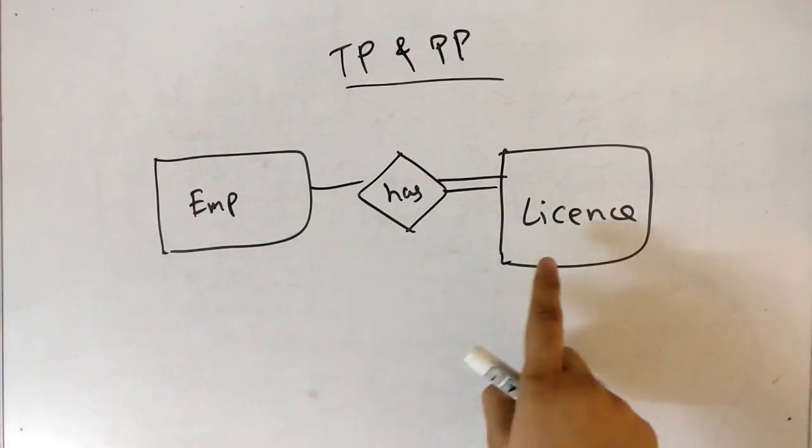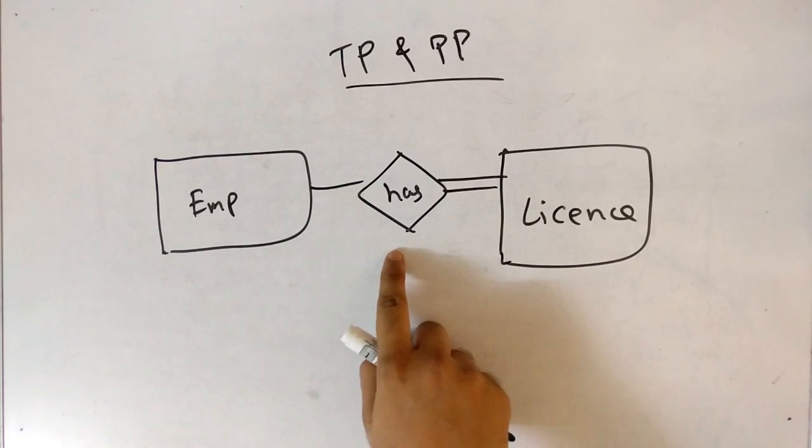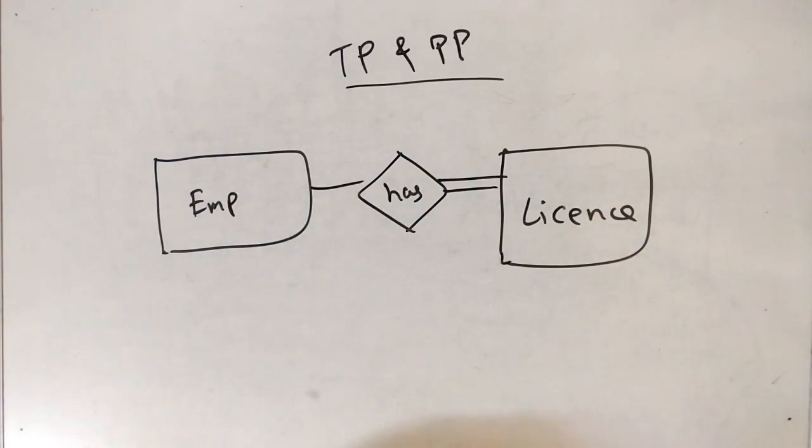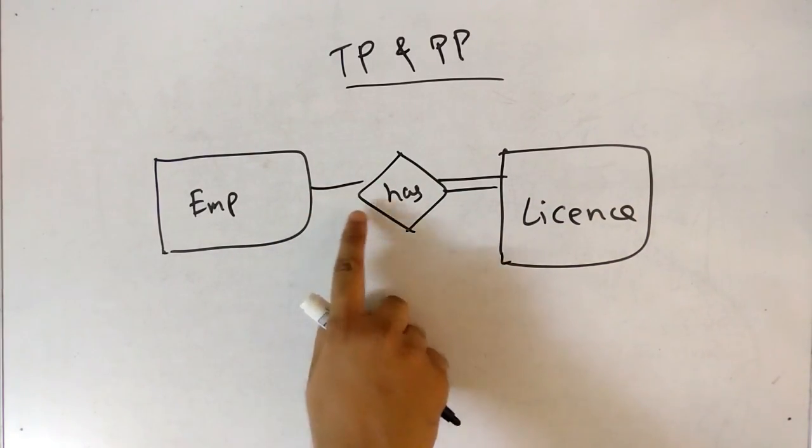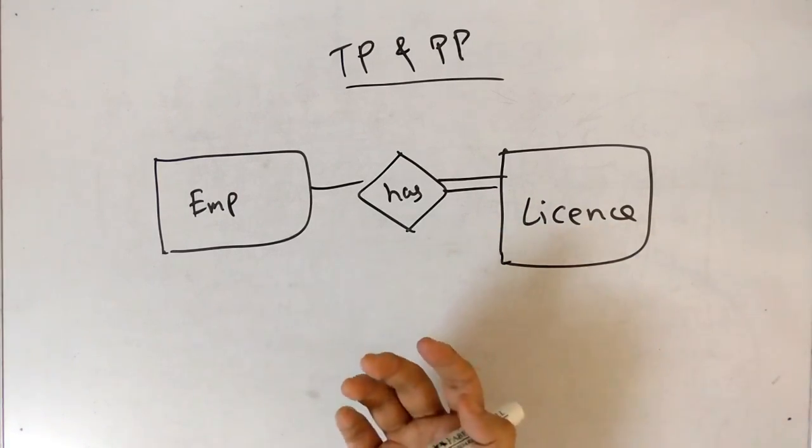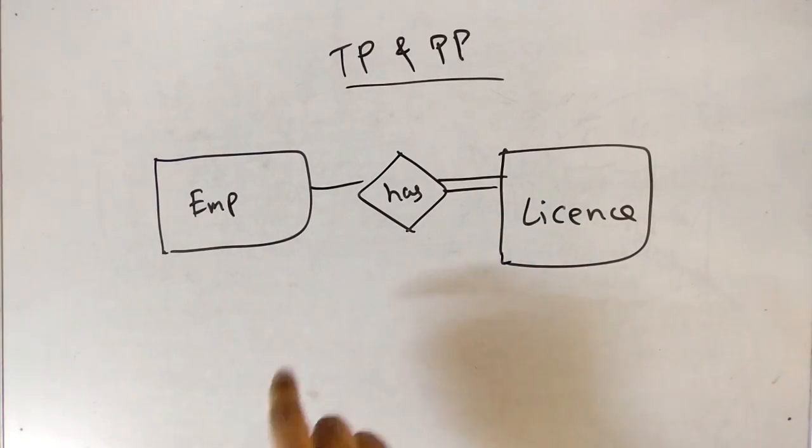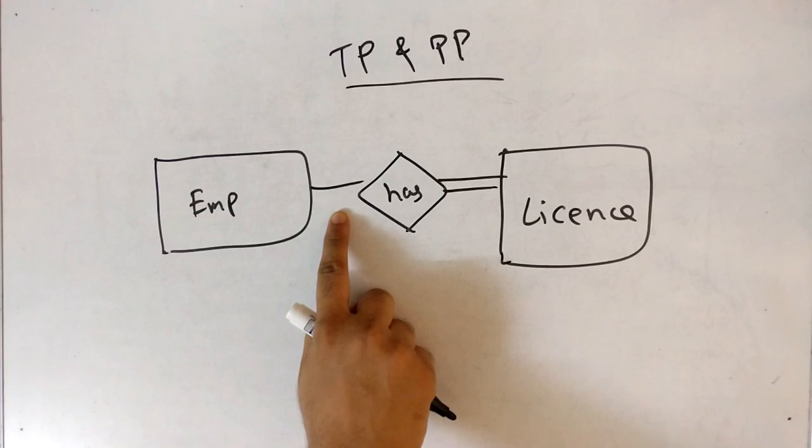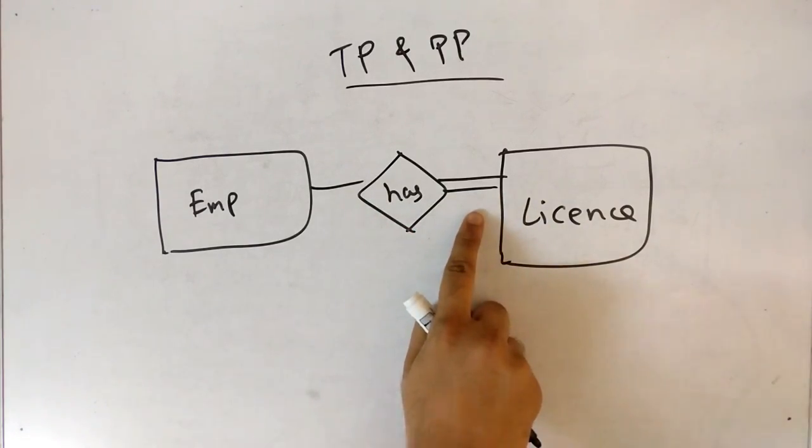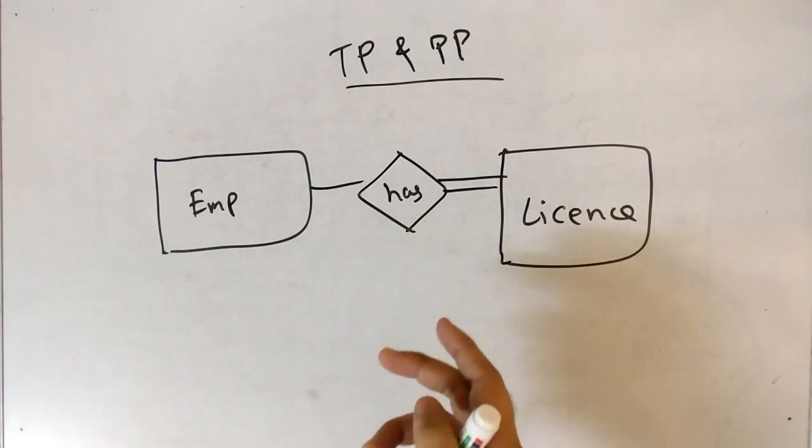Suppose we have two entities employee and license and they are related to each other like employee has license. Now you can note that there is a single line, there is a double line. So what does this mean? So the first point you have to note, the single line means the partial participation. Double line means the total participation. Now how it works?